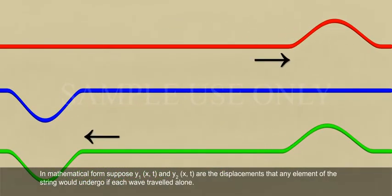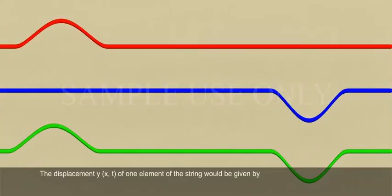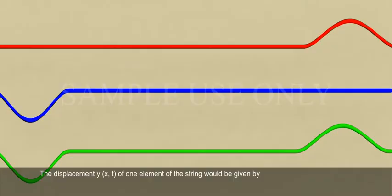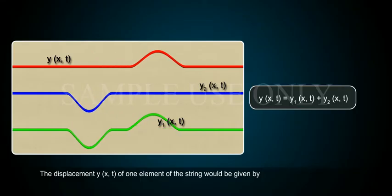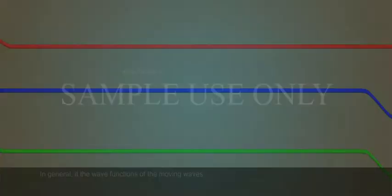suppose Y1(x,t) and Y2(x,t) are the displacements that any element of the string would undergo if each wave travelled alone. When the two waves overlap, the displacement Y(x,t) of one element of the string would be given by Y(x,t) = Y1(x,t) + Y2(x,t). In general,